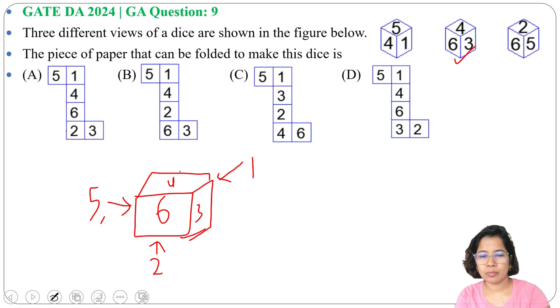5, 4, 1. 5, 4, back side is 1. This is also possible. So option A is possible. So by folding option A piece of paper we can get this dice. After getting answer as option A, you don't need to check the others. Let me check one other option just for the understanding.